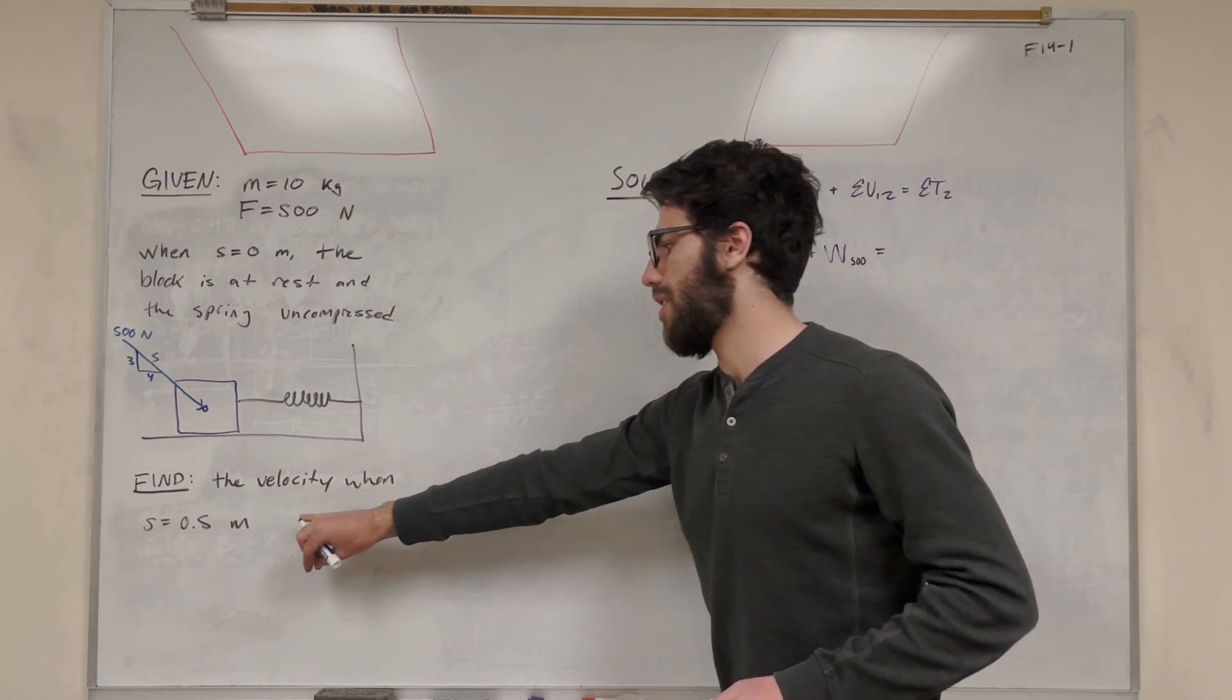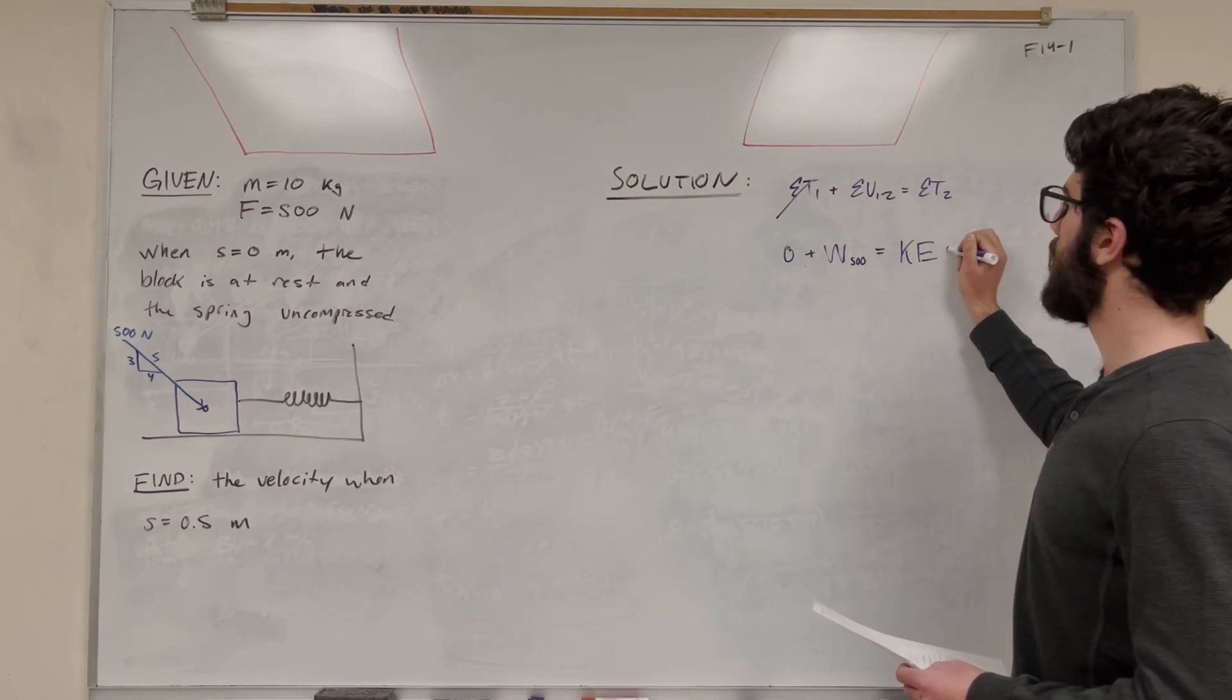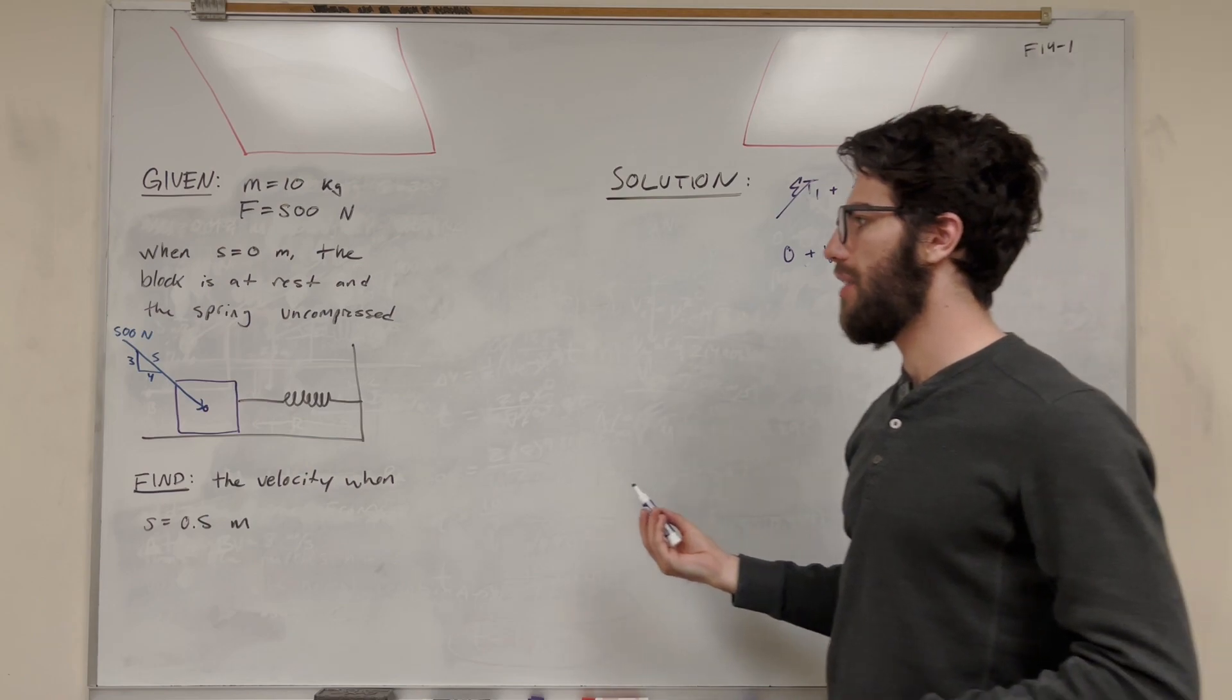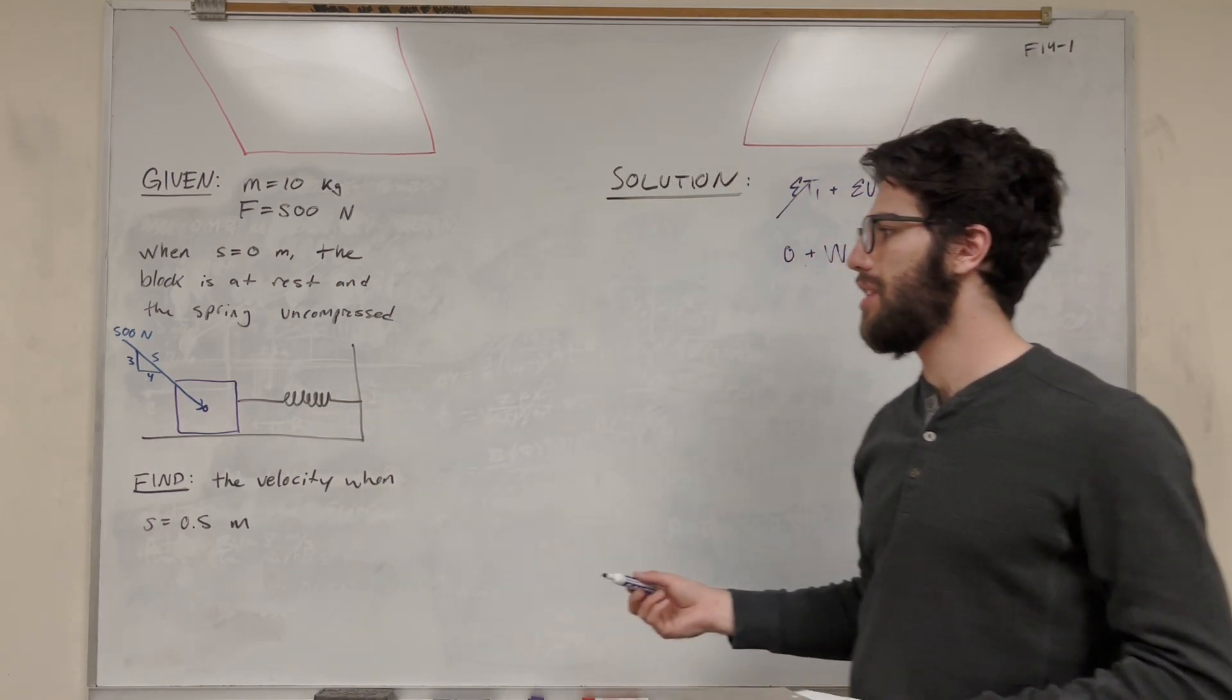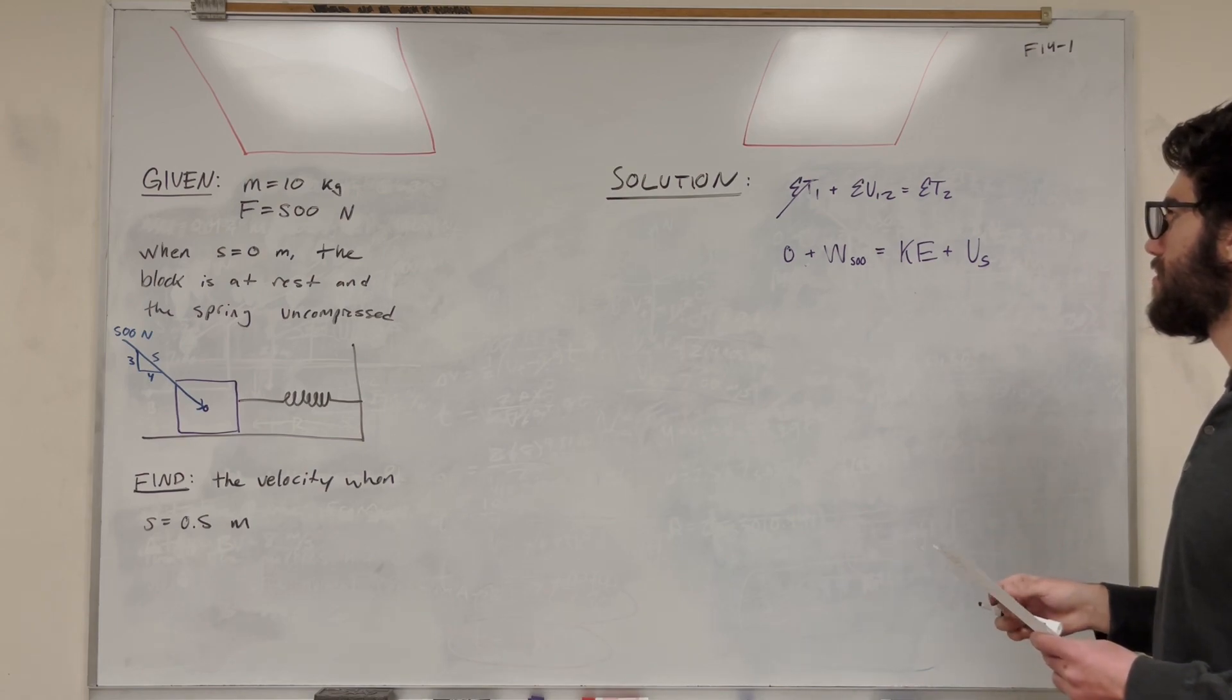And then what is this going to be equal to? At the end, we're going to have kinetic energy because we're trying to find velocity. So we're going to label that kinetic energy. And then what else do we have? Well, the spring is going to be compressed, so we're going to have some potential energy of the spring.